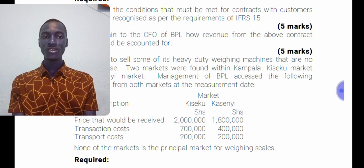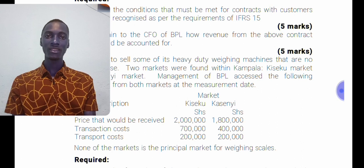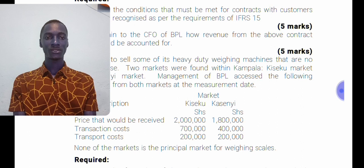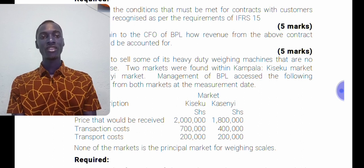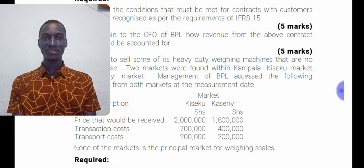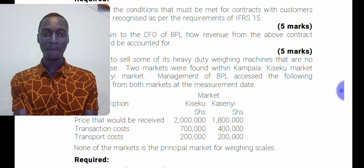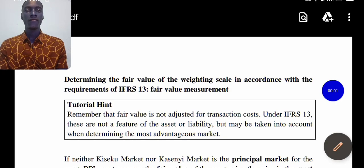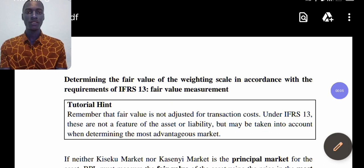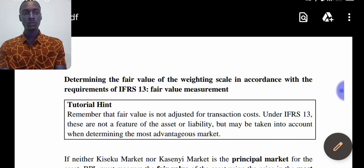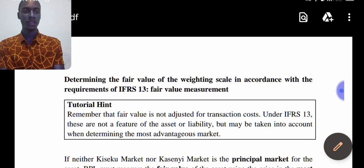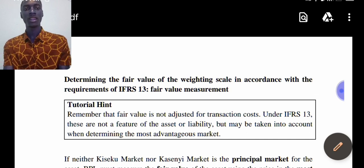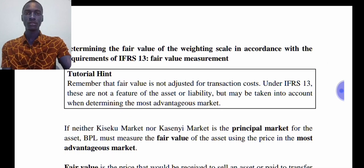Since Kasini Market is the most advantageous market, we use its information to determine fair value. When determining fair value, we do not adjust for transaction costs — those are only used when identifying the most advantageous market. Transaction cost is not a feature of the asset or liability. We only deduct the transport cost from the selling price. So: selling price 1.8 million minus transport cost 200,000 gives a fair value of 1.6 million.